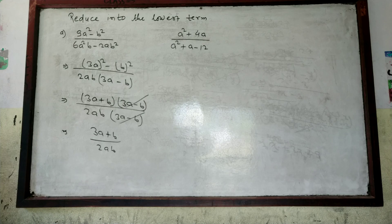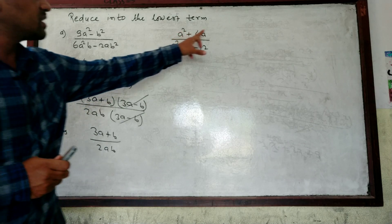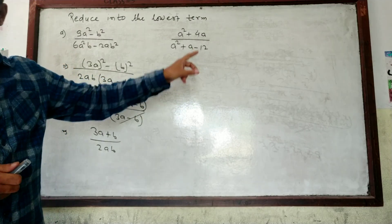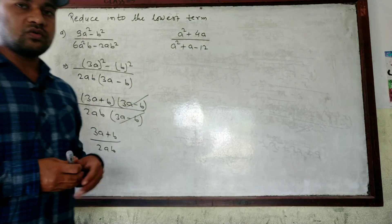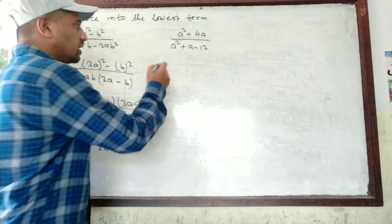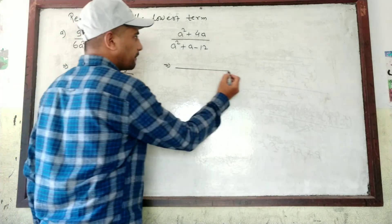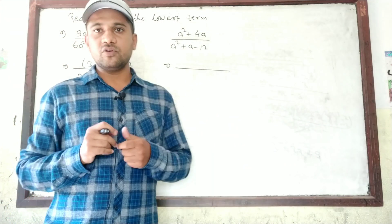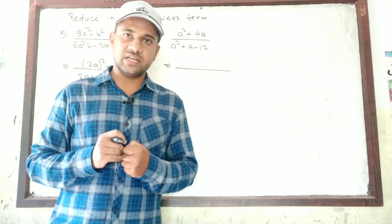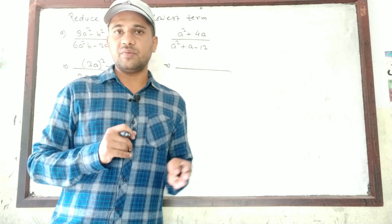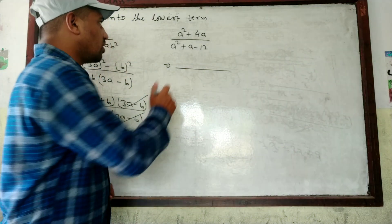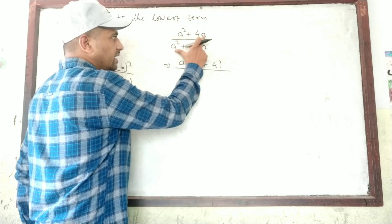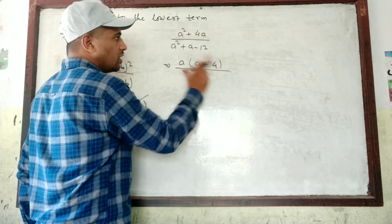Look at the next question: a² + 4a divided by a² + a − 12. I will solve each and every question, so enjoy this video and learn. For the numerator a² + 4a: as I told before, if there is a common factor, take it out first. Here a is common, so we take out a, giving a(a + 4).